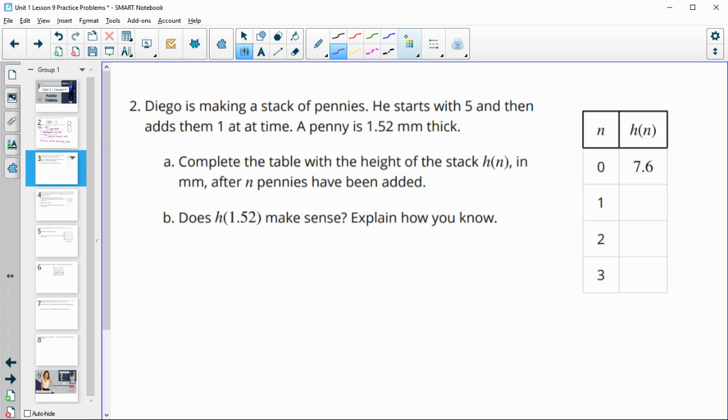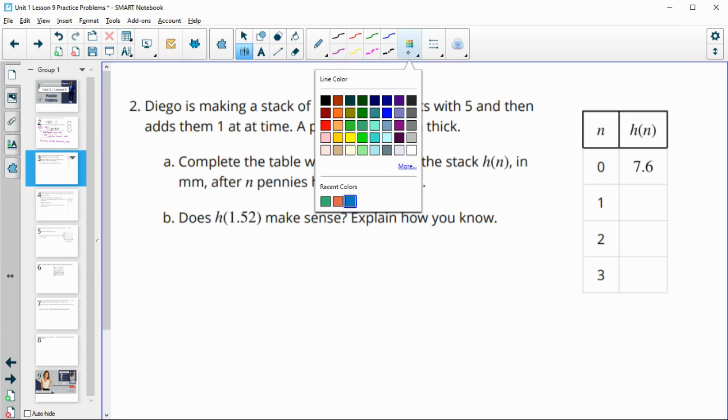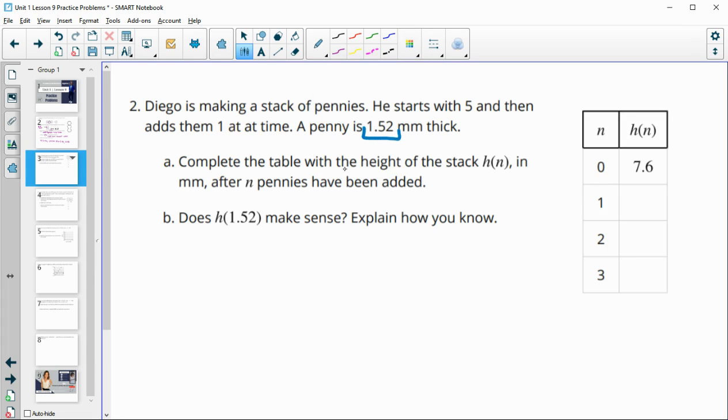Number two, Diego is making a stack of pennies. He starts with five pennies, and then he adds one at a time. A penny is 1.52 millimeters thick. So each time he's going to be adding one of these. Complete the table. So he started with five pennies, which is this thick. Now he's going to add in one penny thickness, which is 1.52. So he's going to add 1.52, which is going to get him to 9.12. Then he's going to add another penny of 1.52 to get 10.64, and then another one to get 12.16.